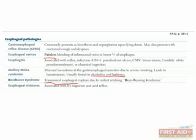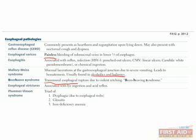Esophageal strictures are a long-term consequence of lye ingestion or acid reflux. Lye is a very strong base used for cleaning in many cases. Lastly, Plummer-Vinson syndrome is an important triad of features: dysphagia, iron deficiency anemia, and glossitis. Glossitis is an inflammation of the tongue causing it to appear swollen and change in color, resulting in a smooth surface. The dysphagia in this case occurs secondary to esophageal webs.